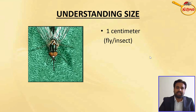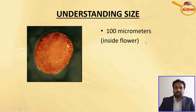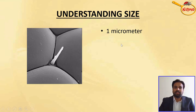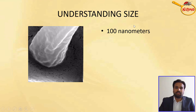If we zoom in further, we can see a fly or insect, which has a size of nearly centimeters. If you zoom a flower structure up to 100 micrometers, the structure will look like this. At 10 micrometers scale, the structure will look like this. Further zooming, we can see flower components like pollen grains — up to 1 micrometer. If you zoom up to 100 nanometers, we can see inside the pollen grains and its inner components.